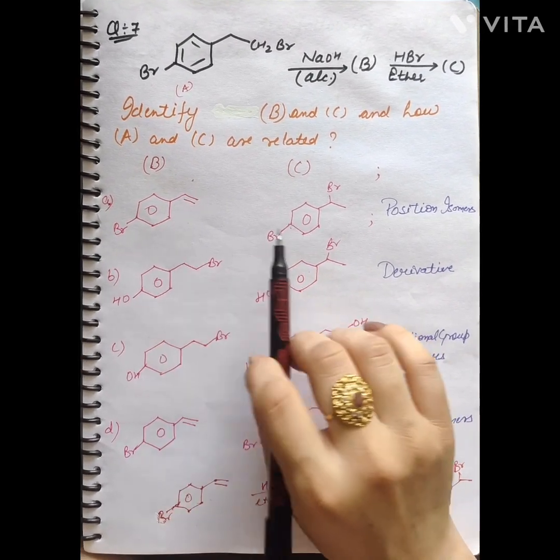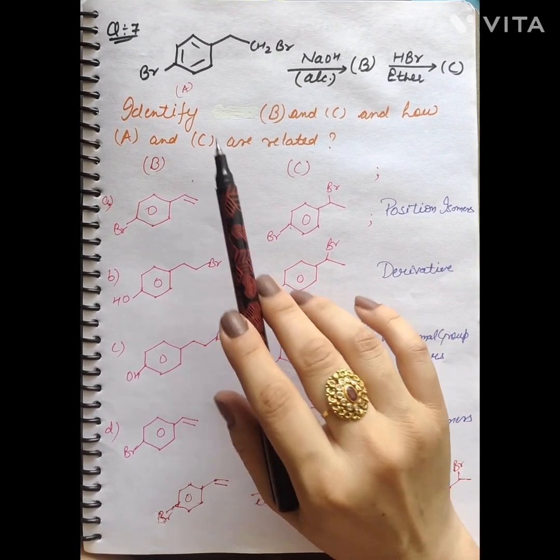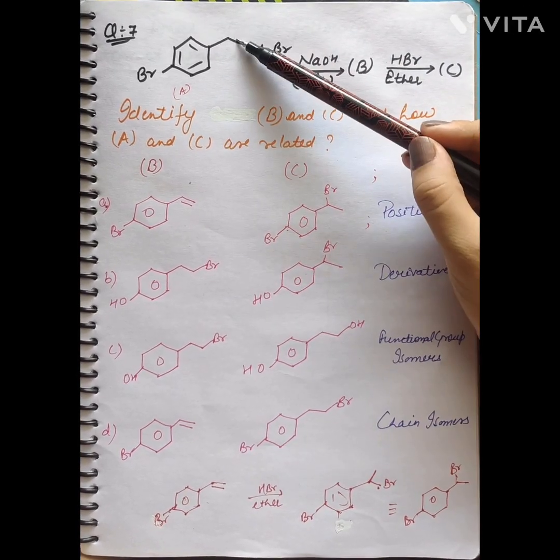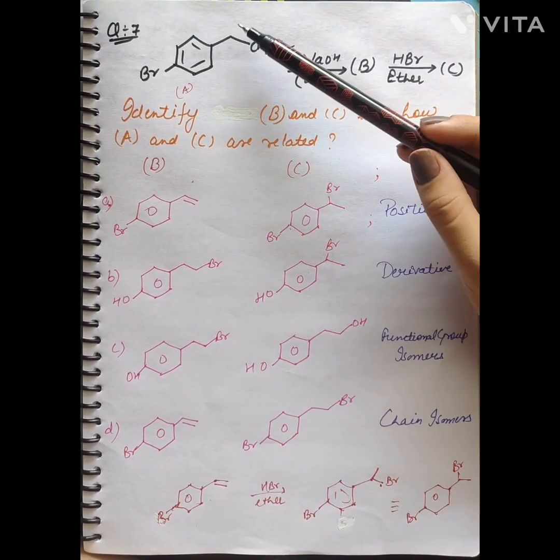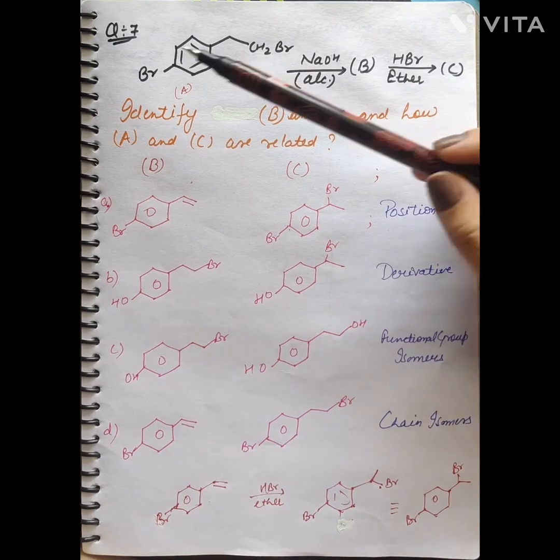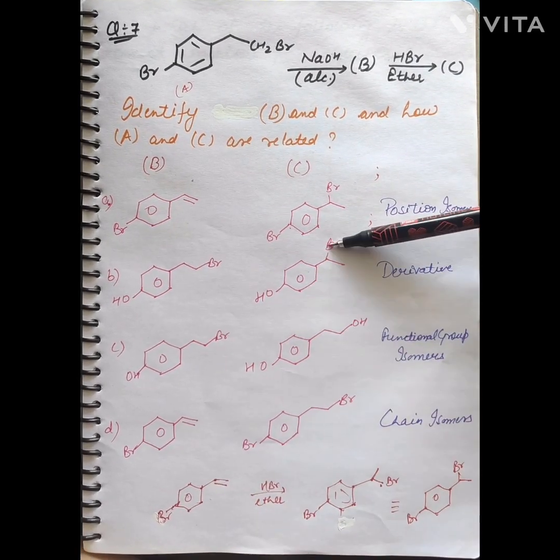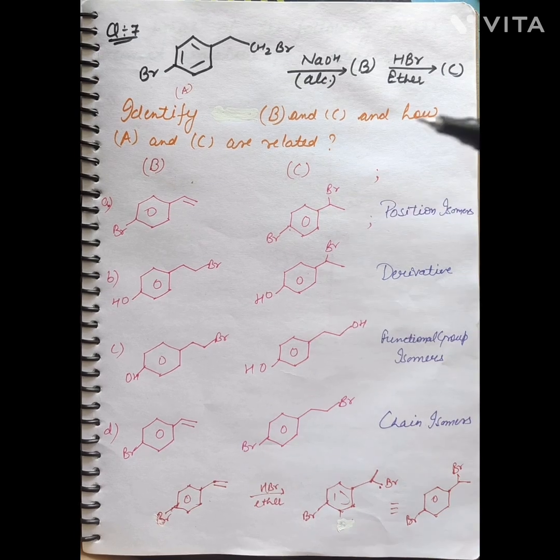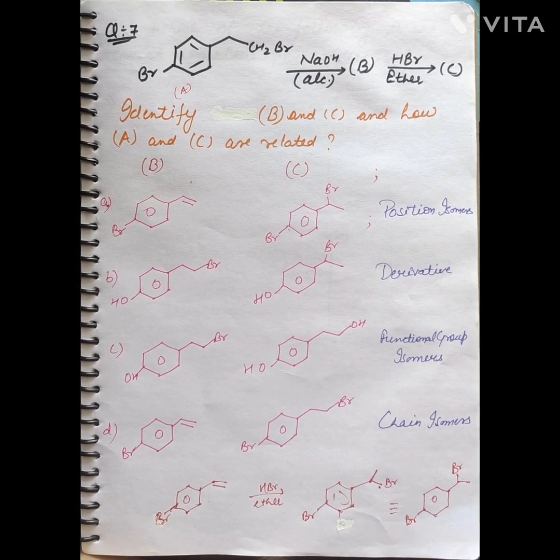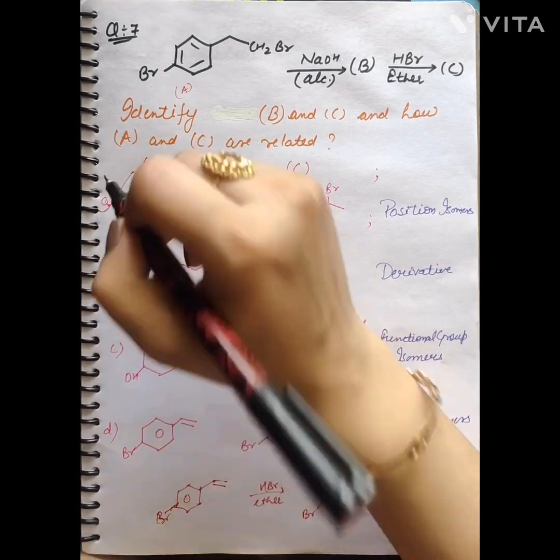Here we have A and C. How are A and C related? They are isomers. Because you can see here the position changed. The product of bromine changed position. We have to identify B and C. A and C are positional isomers. So option A will be the correct answer.